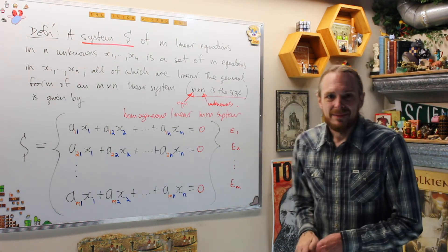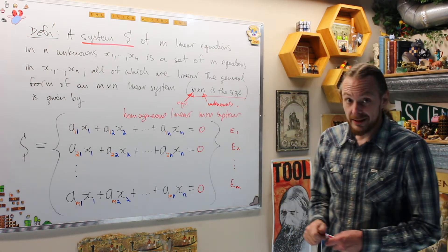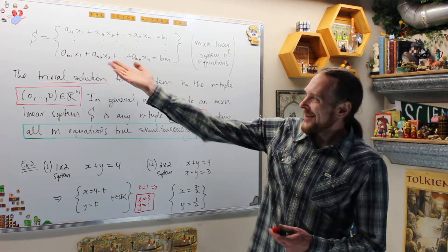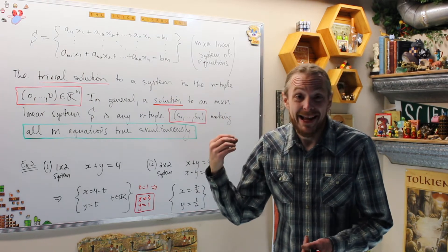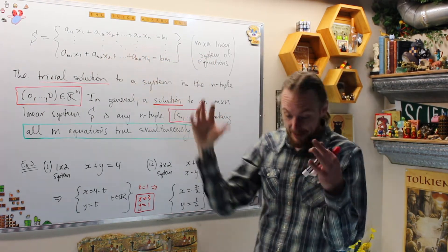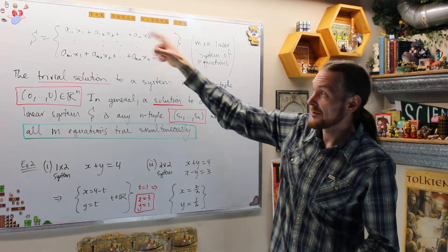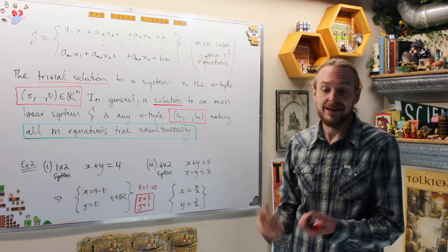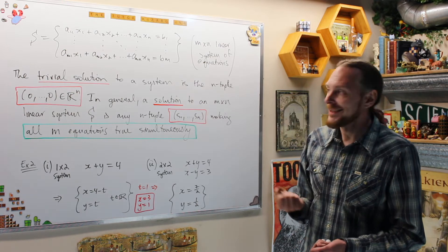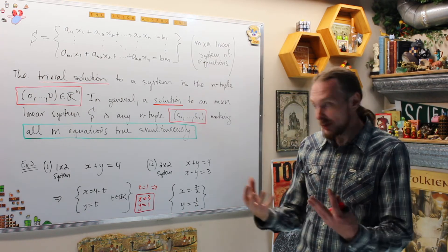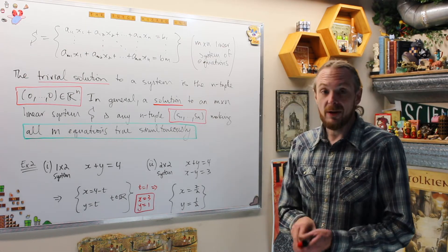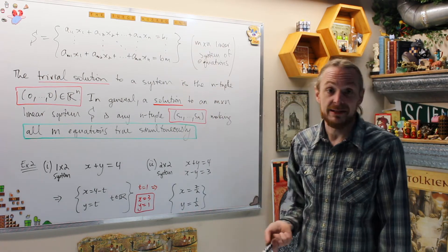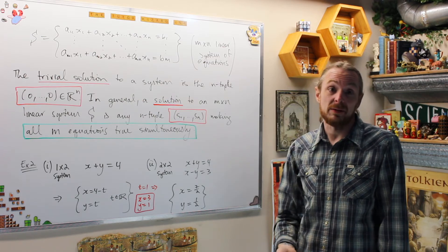Now let's look at a solution to a system. A solution must solve all of them at the same time — simultaneously. A system is called a homogeneous system if all of the right-hand sides of each equation are zero. The trivial solution means it solves all the equations and makes them all zero, and the zero solution is always a solution to a homogeneous system.